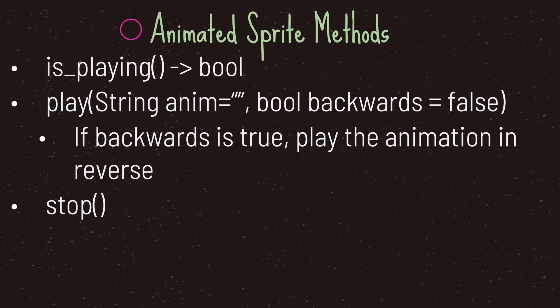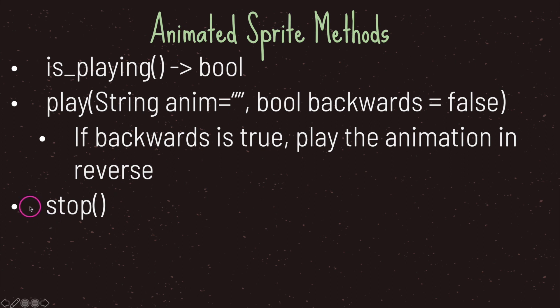The second method, and in my opinion the most important, is the play method. It takes one mandatory argument and one optional argument. It plays the animation you pass into the first argument, and the name will depend on the SpriteFrames resource attached to your AnimatedSprite. The second argument is false by default, but if set to true it plays the animation in reverse. The third method is called stop and it stops your animation from playing.